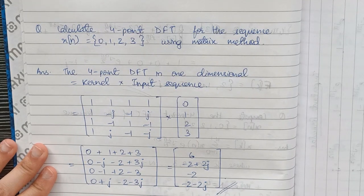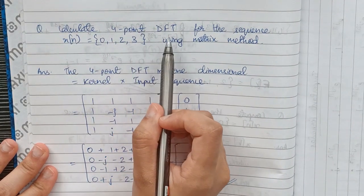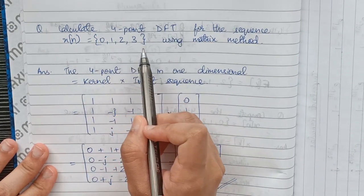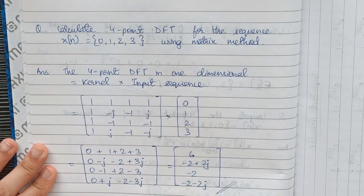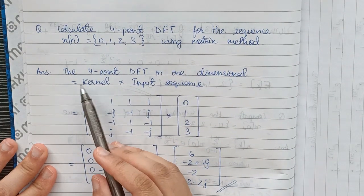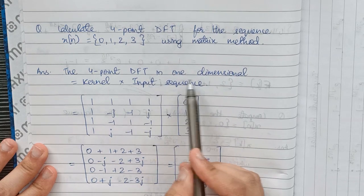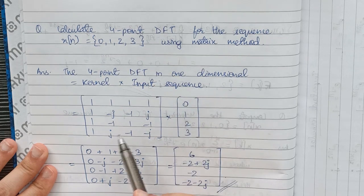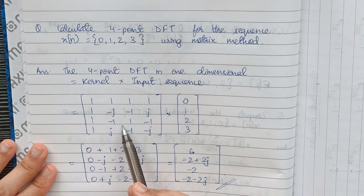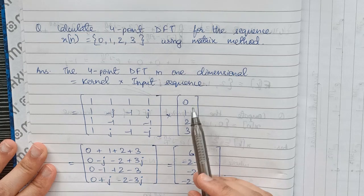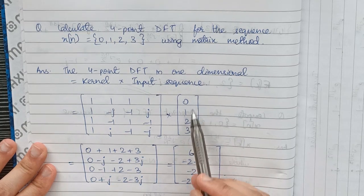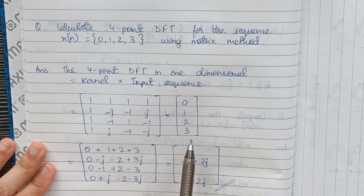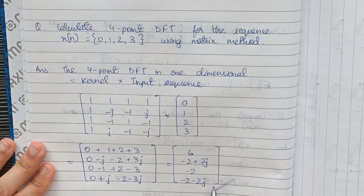Now look at this question: calculate the 4-point DFT for the sequence x(n) = {0, 1, 2, 3} using the matrix method. For 1D, the formula is kernel times input sequence. We have the 4-point DFT kernel and the input sequence. Multiplying these two matrices gives the result.